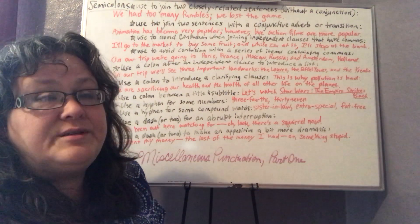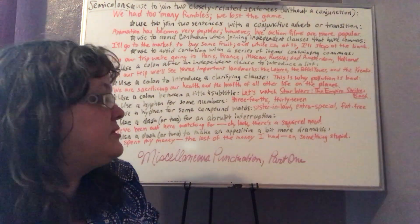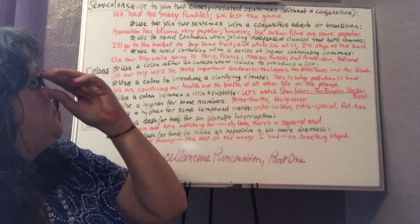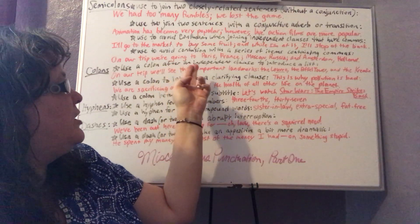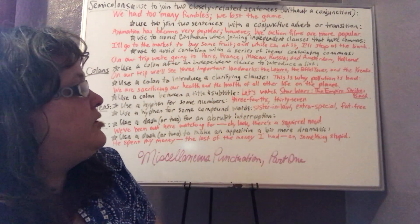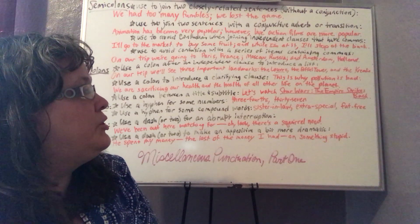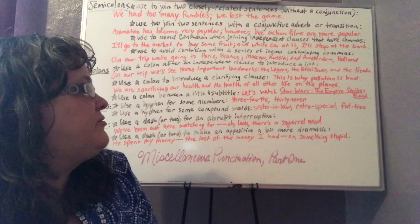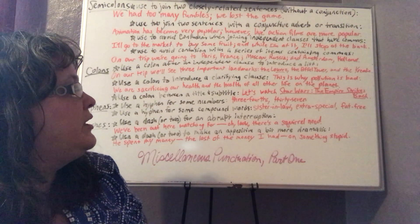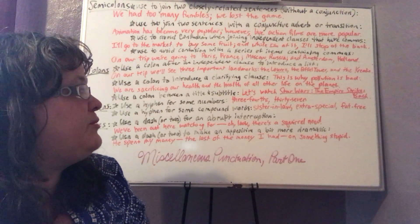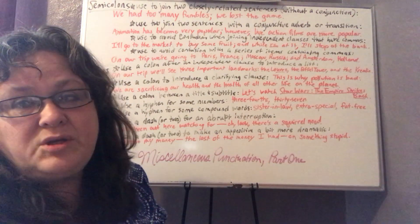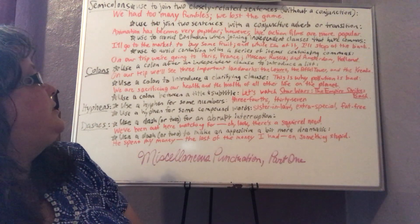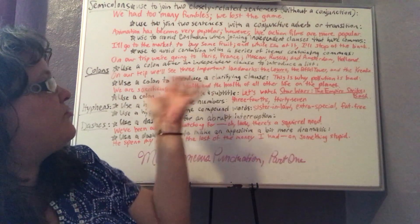The next rule says: use a semicolon to avoid confusion with a series of items containing commas. I often use the example of a series of city-country pairs. For example: 'On our trip we're going to Paris, France; Moscow, Russia; and Amsterdam, Holland.' If somebody didn't know better and you just put commas, it would sound like you're going to at least five or six places on your trip. But actually this is only three places, so we put a semicolon between each place. That's all for semicolons for now.